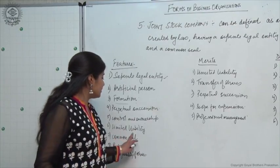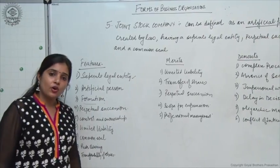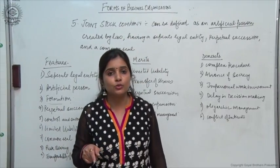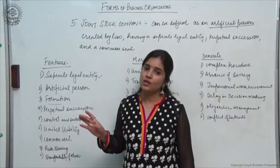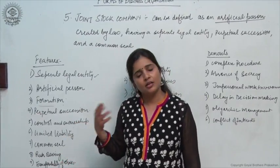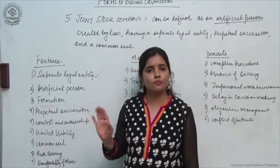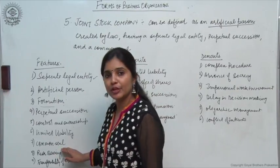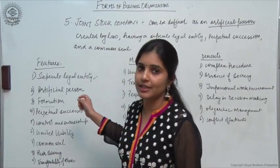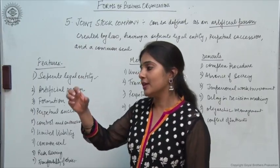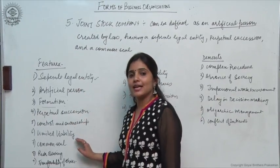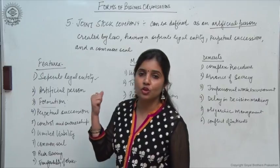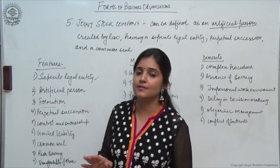Then comes limited liability. When an organization is registered under any particular act, the liability of its members is limited to the amount of capital they have contributed — not more than that. Personal assets are not involved. Common seal: because a company is an artificial person, it cannot sign contracts on its own. Therefore, there is a stamp which acts as the official signature of the company, called a common seal. As long as a company's documents do not carry the common seal, they will not be considered legal.